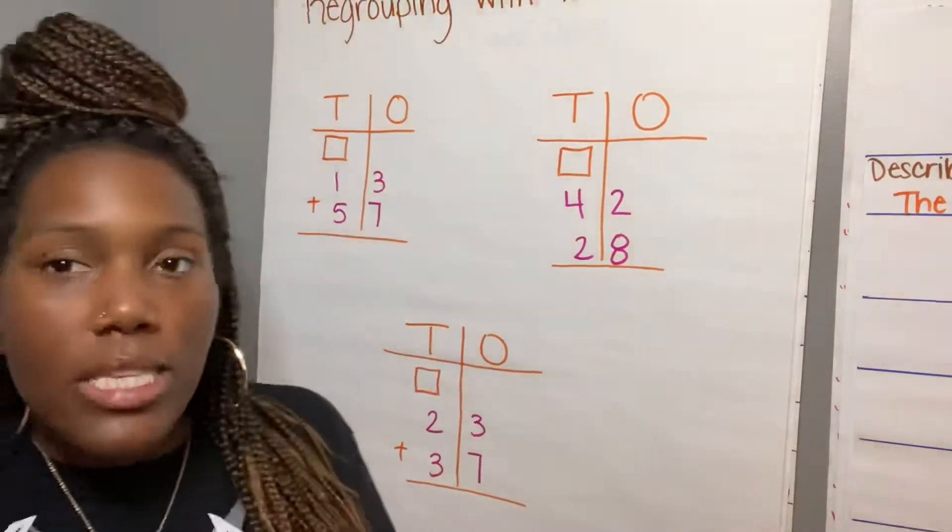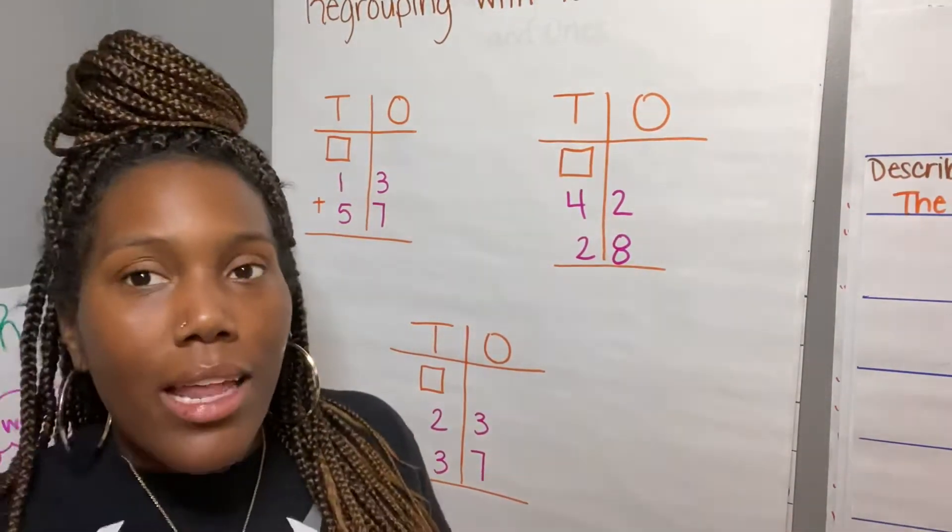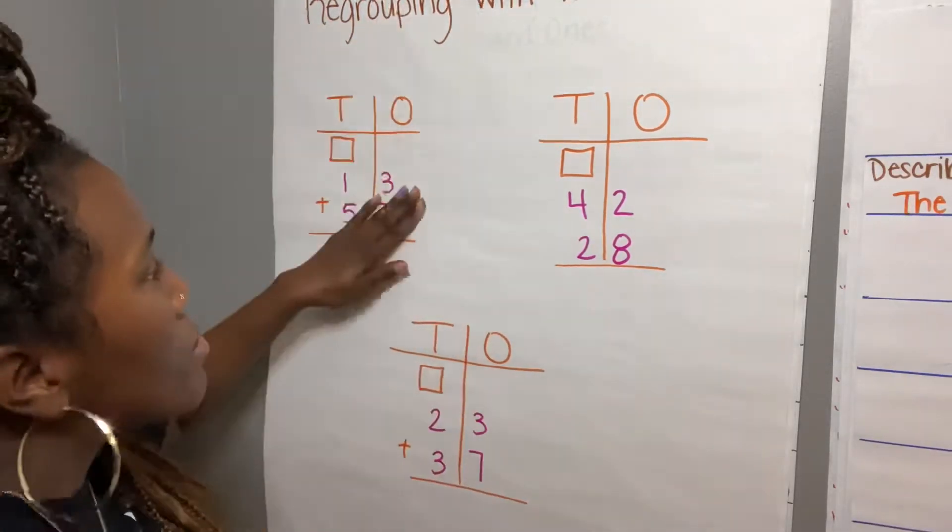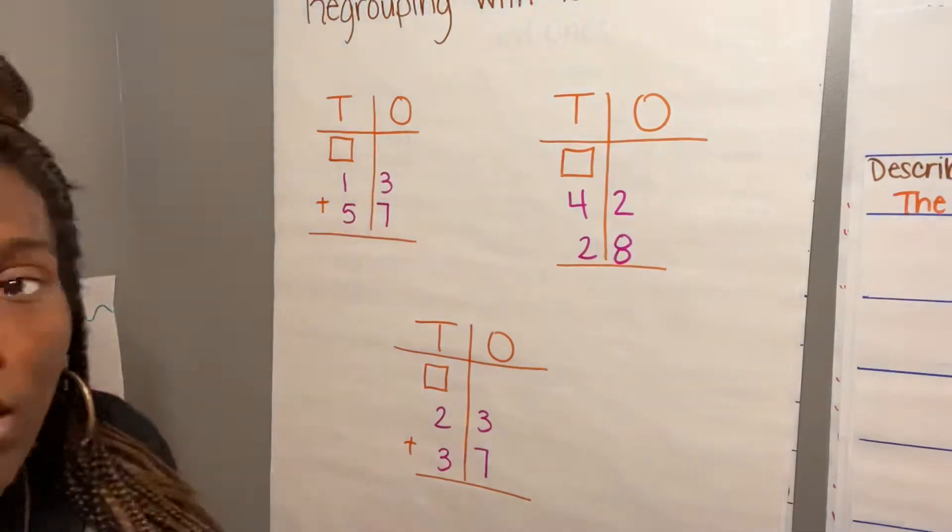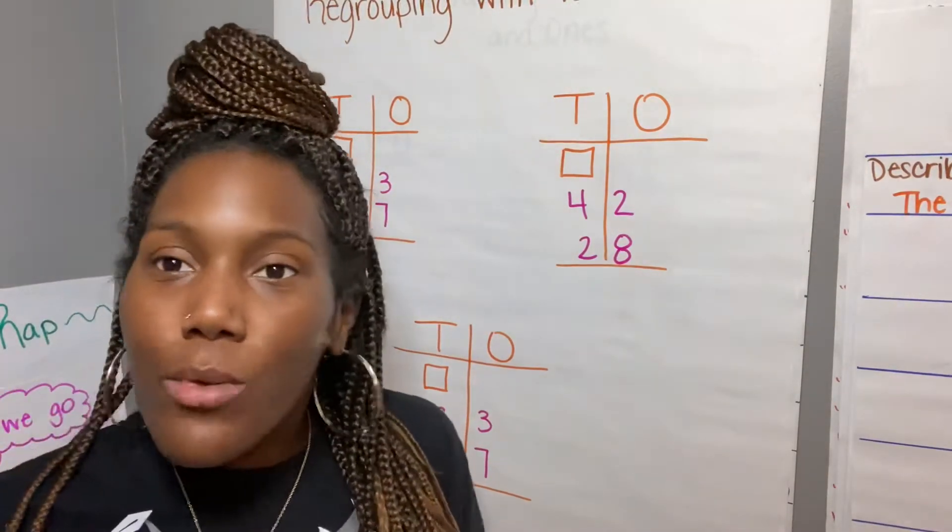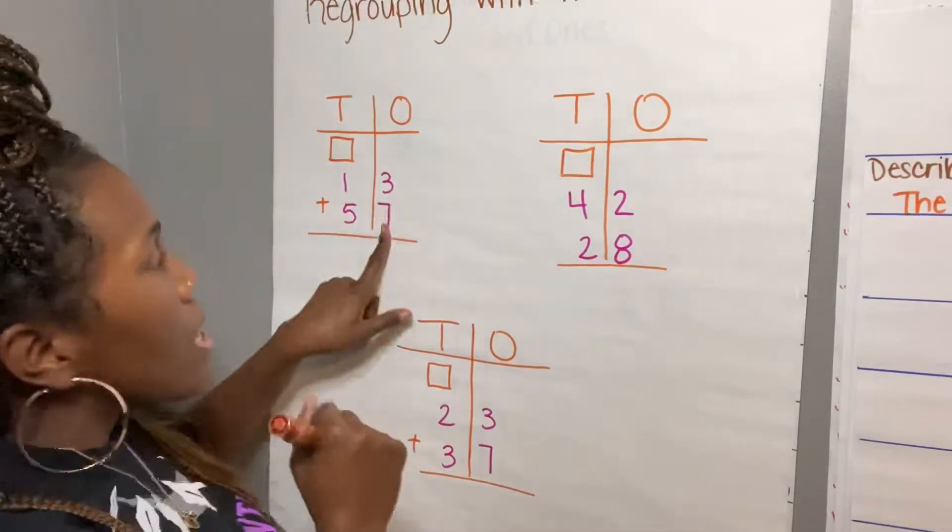Now remember that we're always going to start adding on our ones side first. So when I look at our problem, I know 3 plus 7 equals 10. You got it? So I'm going to take my marker and I'm going to think about, okay, I have a 10.